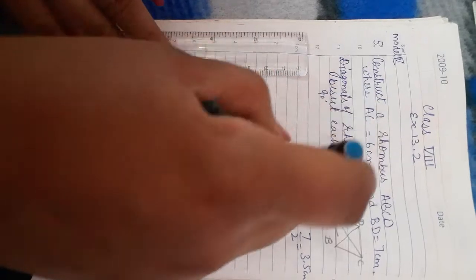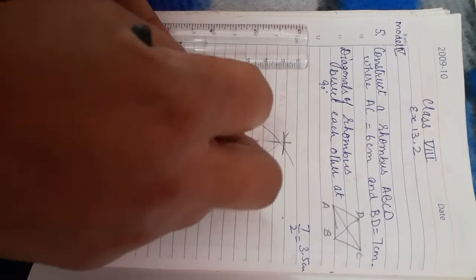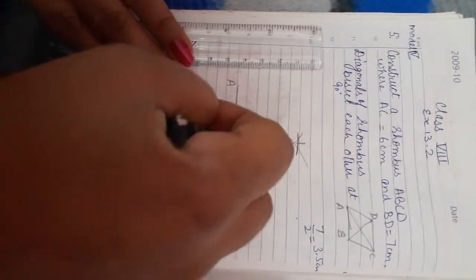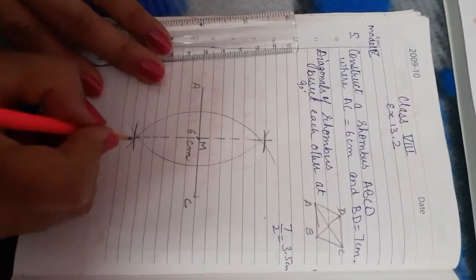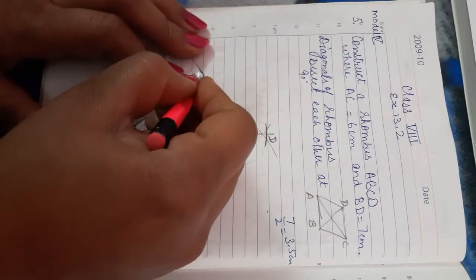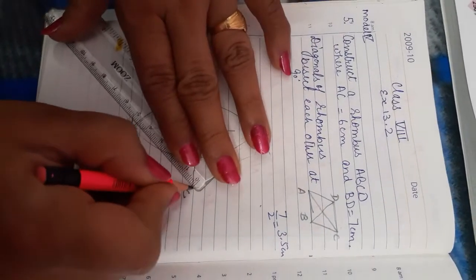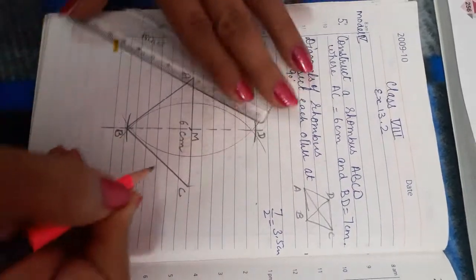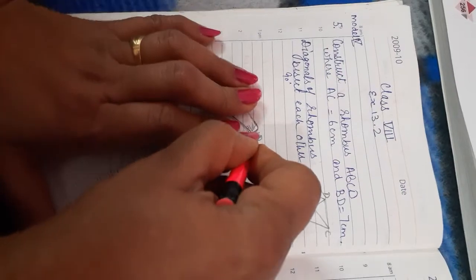On the perpendicular bisector we drew, cut it upward and downward with half of the second diagonal, and we find point B and D. The total length BD will be seven centimeter. This way the rhombus is formed. Join A to B, B to C, A to D, and D to C.